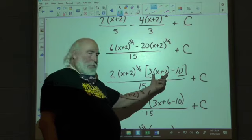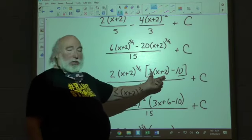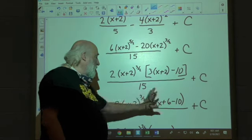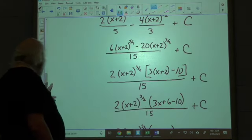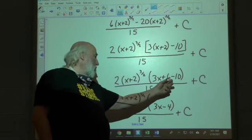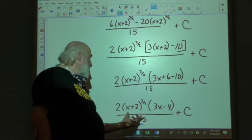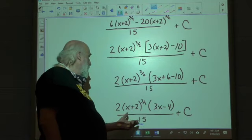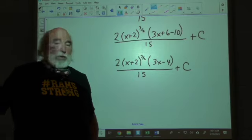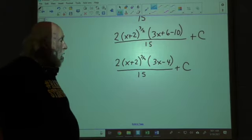So, now we distribute the 3 across this parenthesis here. Gives us 3x plus 6. Everything else stays the same. And then, we combine like terms here, which is 6 and negative 10. And that gives us 3x minus 4. And that is your integration for that particular function.